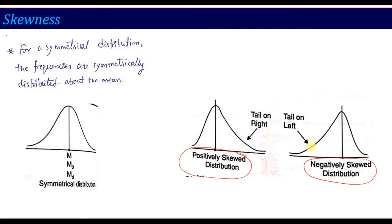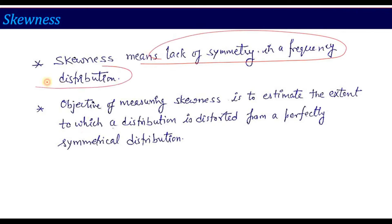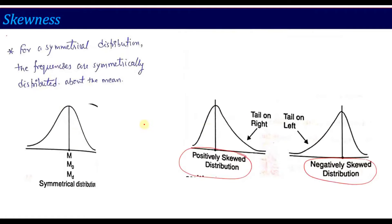The one-line definition: skewness means the lack of symmetry in a frequency distribution. It is also defined as the objective of measuring skewness being to estimate the extent to which a distribution is distorted from a perfectly symmetrical distribution. That is why skewness is a very, very important characteristic — it tells us how much distortion exists, whether our data is going positively or negatively from symmetry.